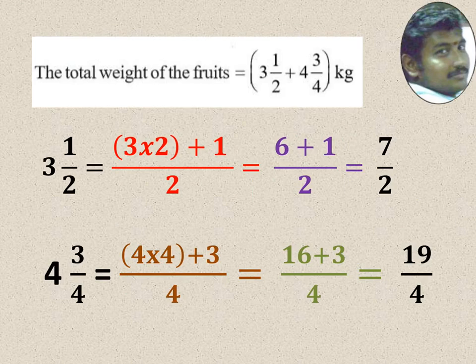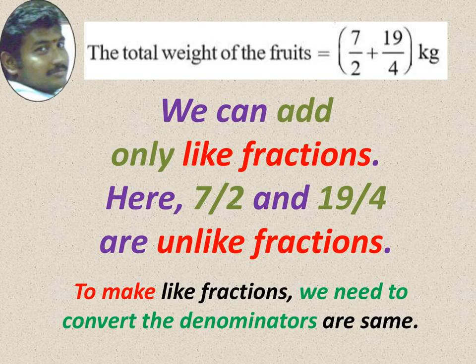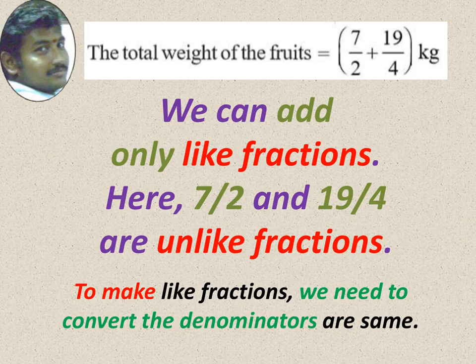So we made mixed fractions into improper. Now total weight of the fruit is equal to 7 by 2 plus 19 by 4. 7 by 2 and 19 by 4 are not like fractions. So we have to convert into like fractions. To convert, you should have same denominator.